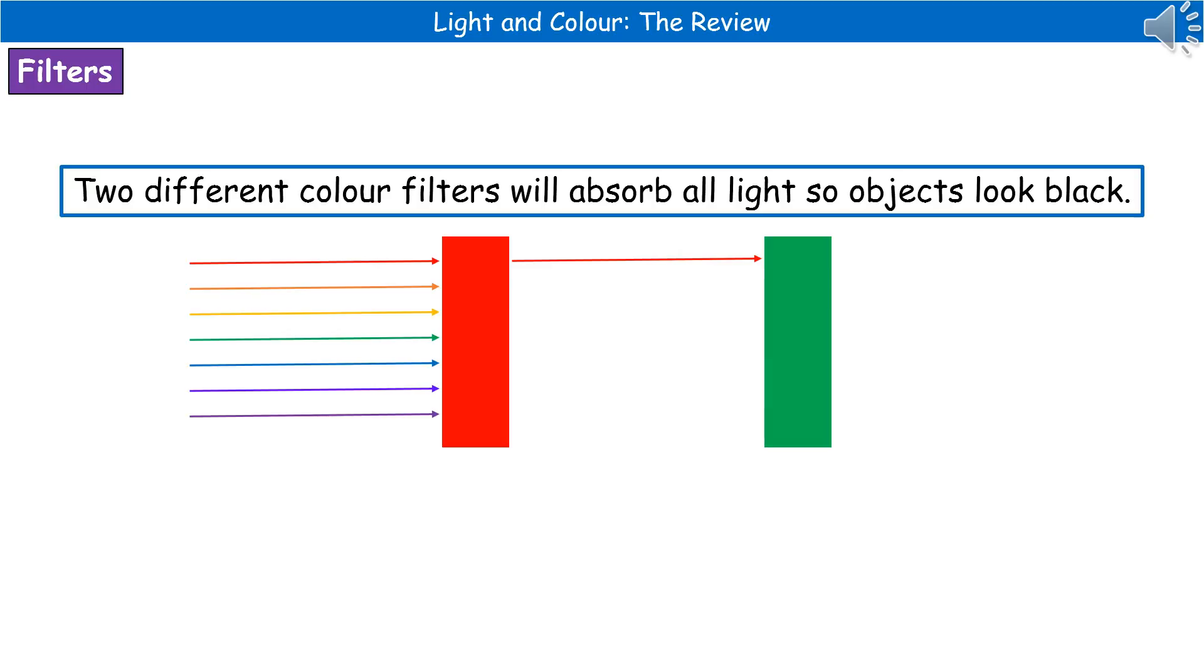If we decided to go a little bit crazy and add a second, different colored filter, then what we're going to see is nothing. Because our red filter is going to absorb everything but the red, and then as it goes towards our green filter, that would absorb everything except the green. But we don't have any green light. So that will absorb our last bit, our red frequency, so that the objects just look black at that point.